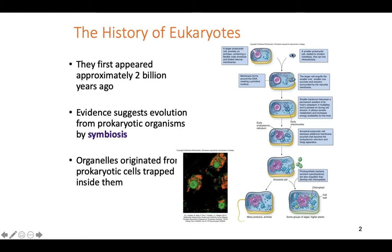So you have this large prokaryote — it eats a smaller prokaryote and brings it inside its cell. For whatever reason, this cell that's been eaten, this little small Rickettsia-like cell, does not become digested. It doesn't break down inside the cytoplasm. So this little small cell persists. The DNA inside this little bubble from the membrane eventually becomes the nucleus. These little tiny bacteria that were eaten start giving energy to the big cell — they don't have to find food anymore. The big cell finds all the energy for them and gives the little cells protection. So both get something: the big cell gets lots of energy, and the little cells get protection.